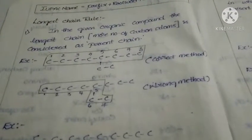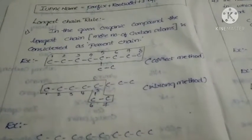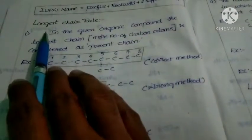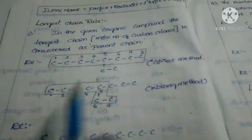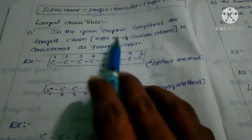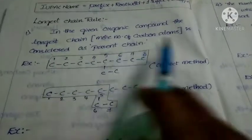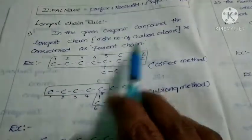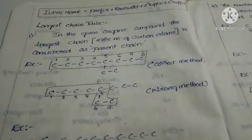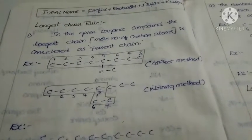To write an IUPAC name, we should know some more rules. The first one is the longest chain rule. In a given organic compound, the longest chain is considered as the parent chain. The longest chain is the one with the most number of carbon atoms present in that chain.